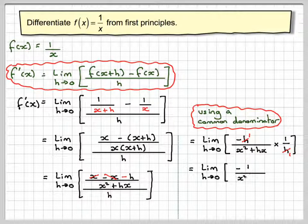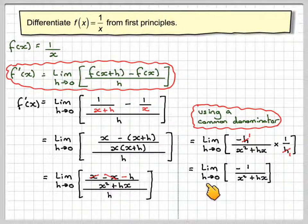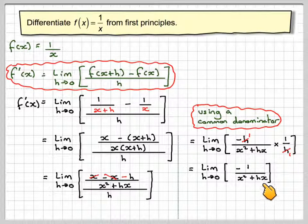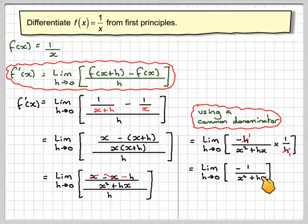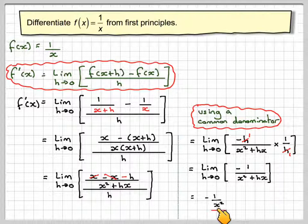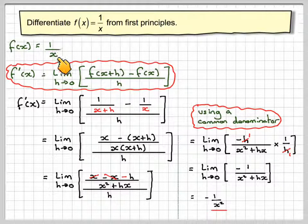So we have the limit of -1/(x² + hx). Now h is very very small, so this term here we can ignore because it's going to be extremely small, and therefore we're just left with -1/x² as the gradient function for 1/x.